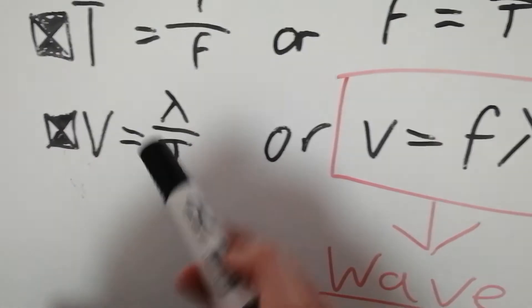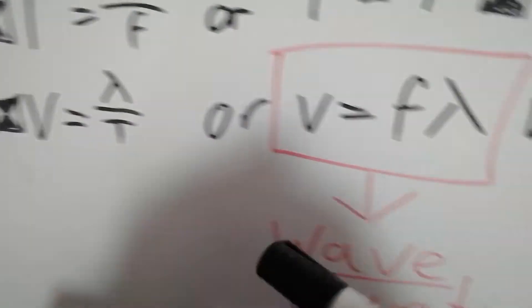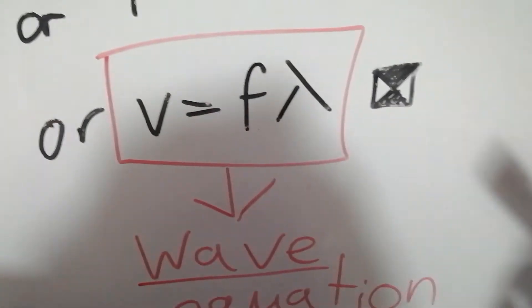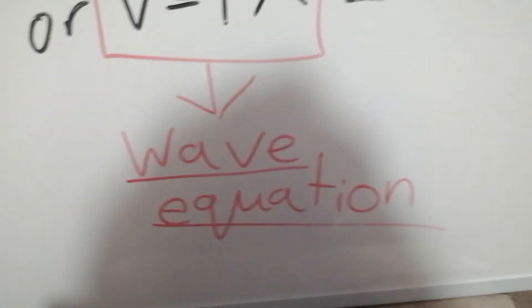Here we've got v is equal to lambda over t, or v is equal to f times lambda, which is actually the wave equation.